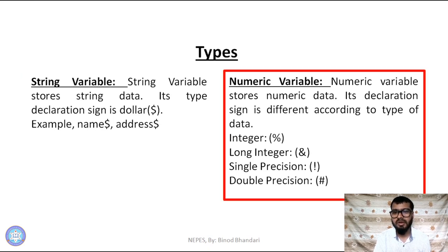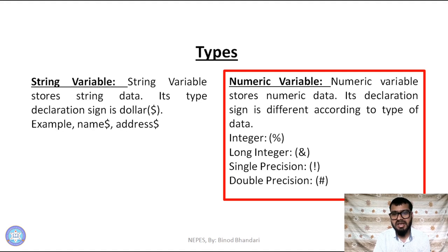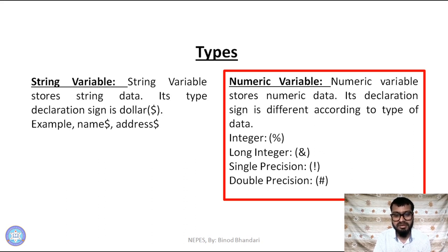The numeric variable stores numeric data. Every numeric data can be stored in a numeric variable. This numeric variable is followed by a different sign according to the data type. If the data is integer, we use the percentage sign (%). If the data is long integer, we use the ampersand sign (&). If the data is single precision, we use the exclamation mark (!). If the data is double precision, we use the hashtag (#).